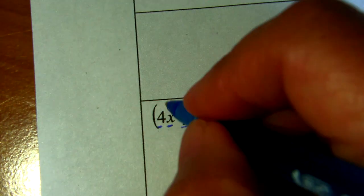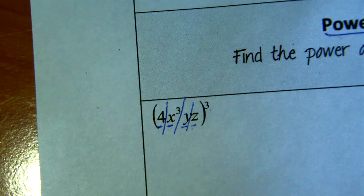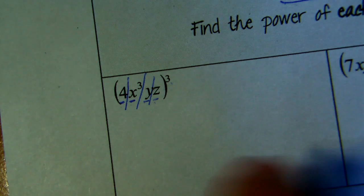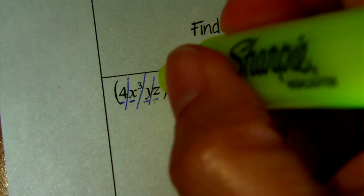So what I'm going to do is just split them and write them as separate products. But all of them are raised to the power of 3.